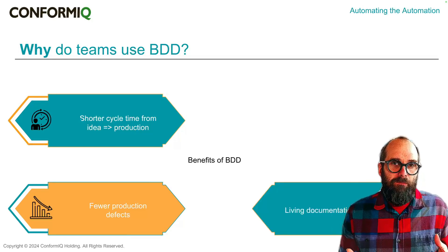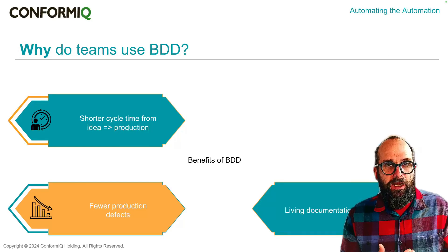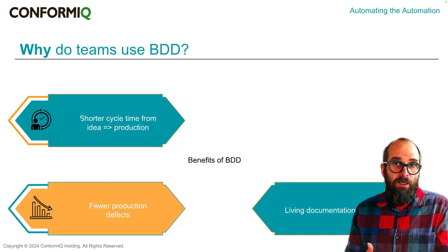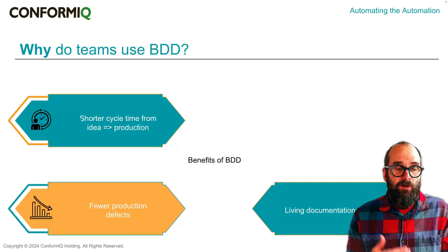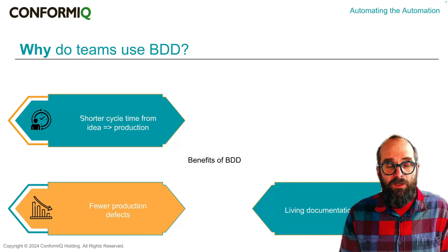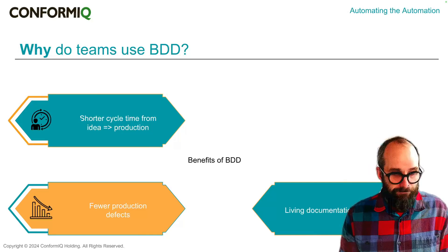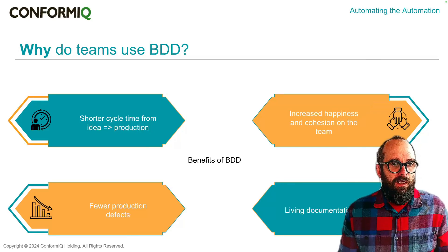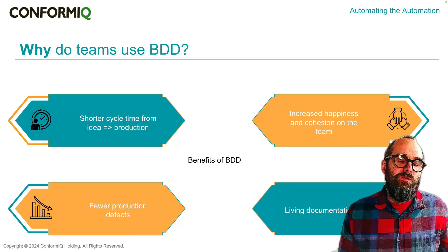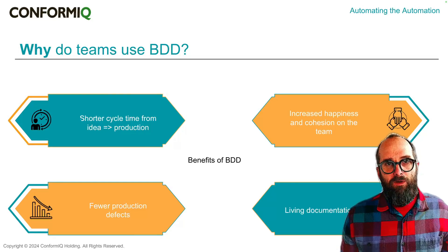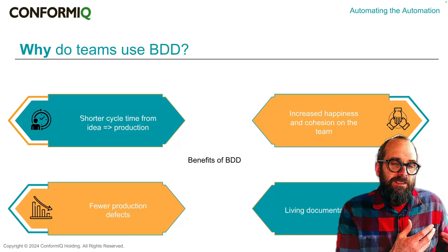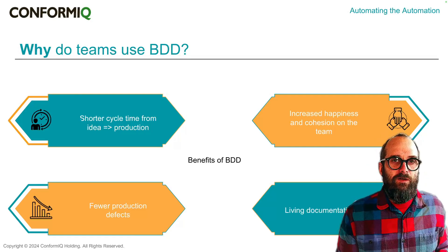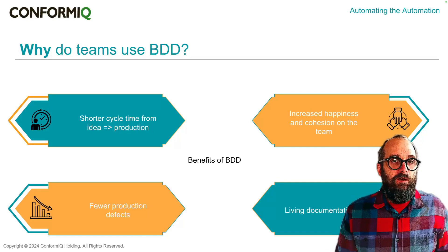What we end up with is a living document. Because we've used plain language to describe the behavior of the system, those plain language scenarios also work as automated tests. Now we've got a document that anyone on the team could read, and it's regularly validated — like every time you run your continuous integration tests, you're validating that documentation. I've seen time and time again that overall this practice leads to teams that are happier and more cohesive. Teams talk about having greater empathy for one another, because we're really working together to understand and deal with uncertainty that we often tackle late in a software project — we're proactively working to uncover it.